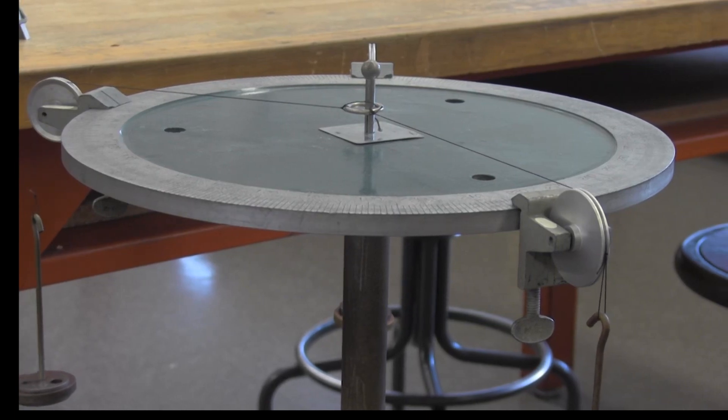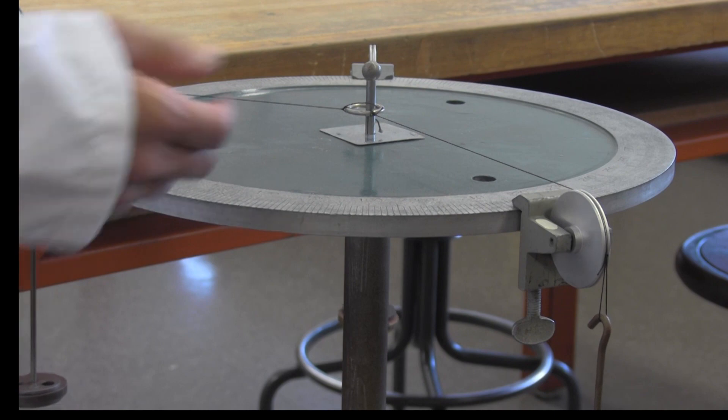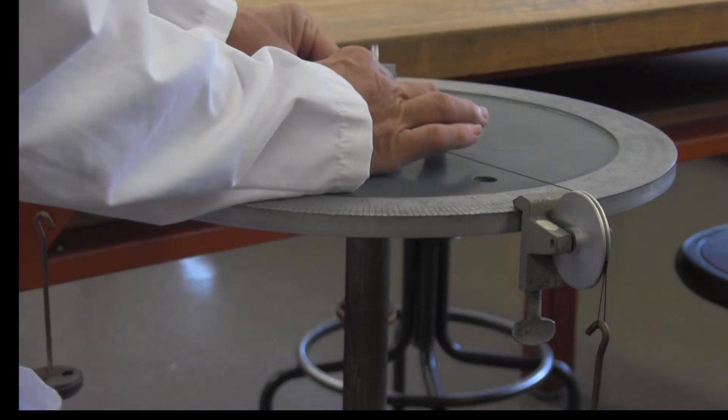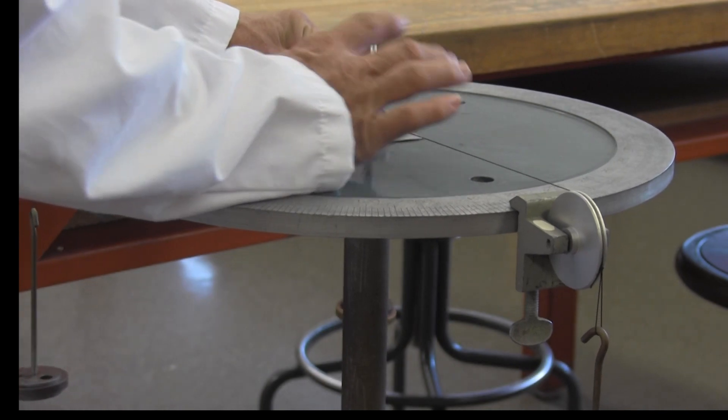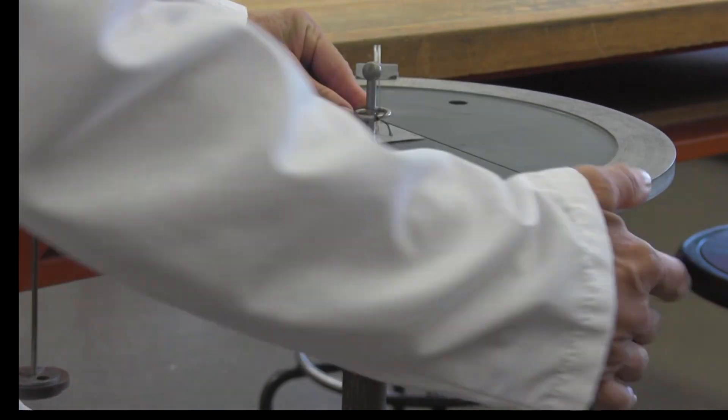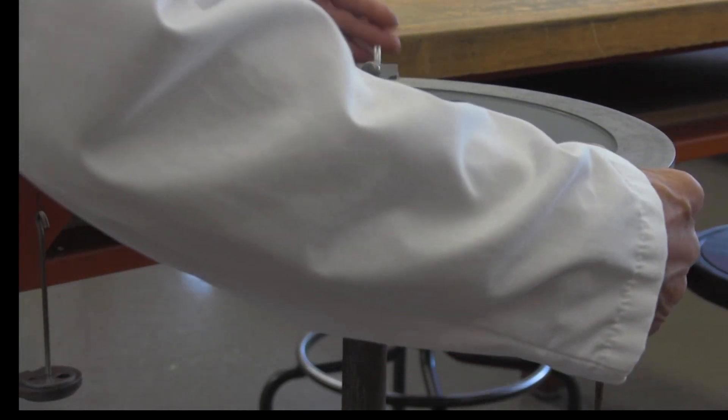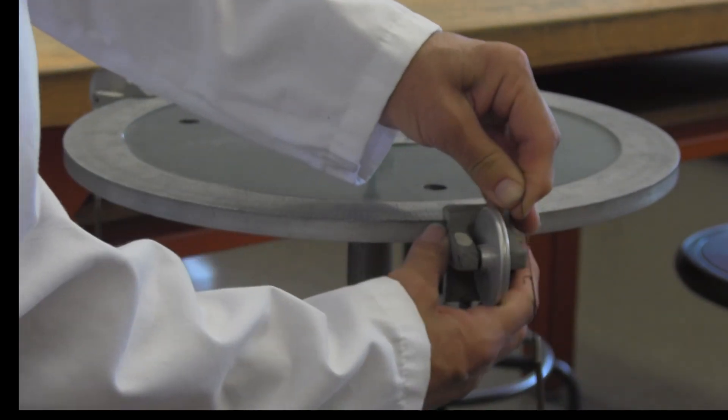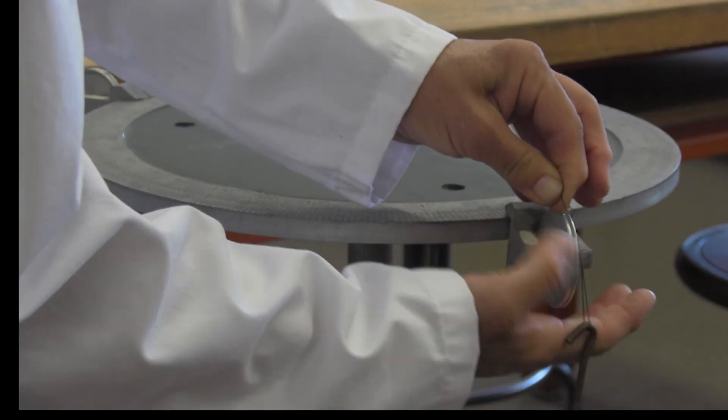Today I'm doing the force table video. I've got three forces. I'm going to balance them by making sure that this ring is not touching the pin on either side. I've already put weights on this force and this force, and now I'm going to pull this and get an idea of where I need to move this.